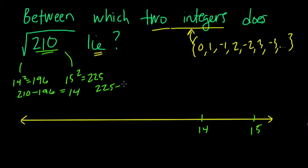And 225 minus 210 is 15. So it's a little bit closer, about halfway, to 14, because the difference is a little bit less. So this is the positive square root of 210.